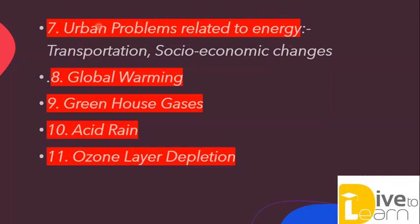The seventh problem is urban problems related to energy. In urban areas — towns, cities — there is a lot of energy problem for transportation and socio-economic changes. Energy is found as solar energy and electricity and is used in homes, households, gadgets, industries, and transportation, including metro systems. Teaching children how to save energy in cities is very important, but it is not adequately covered in our syllabus, so we face major problems in helping children understand energy-related issues.